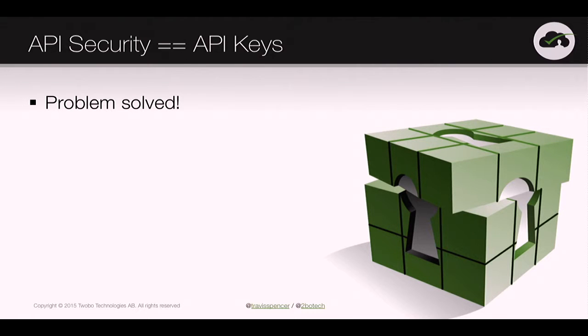But seriously though, how many times do you hear this — okay, we're going to have APIs, we need to secure it, we're going to use API keys. And then you move on. What are API keys though? API keys are revocable, non-expiring, bare access tokens.